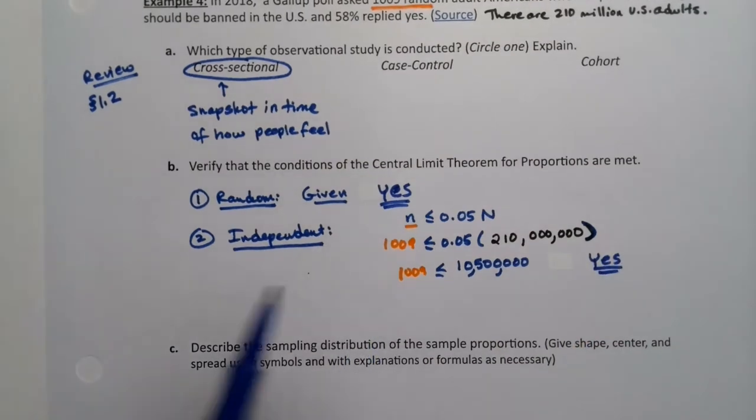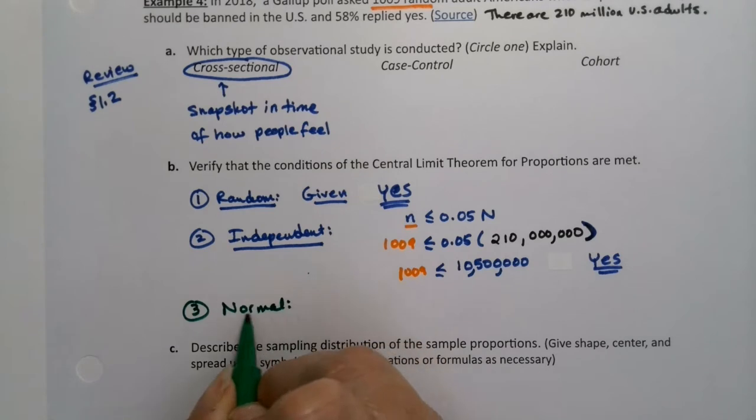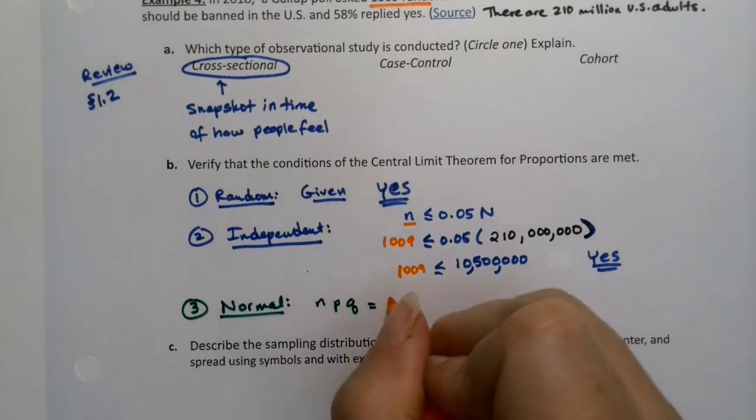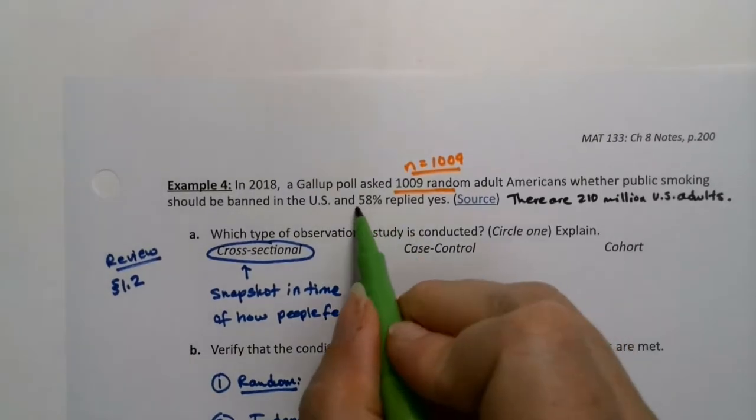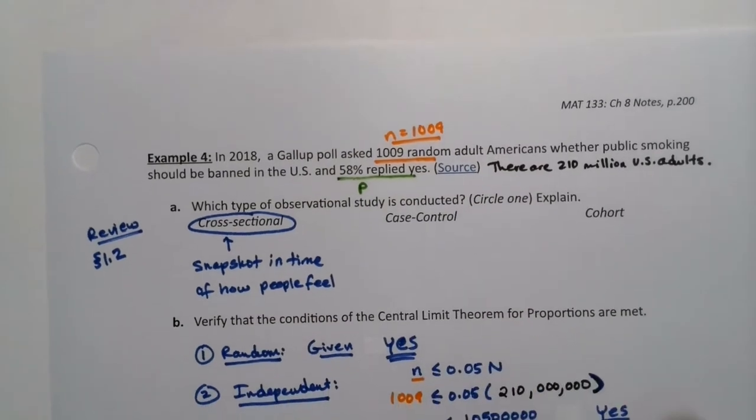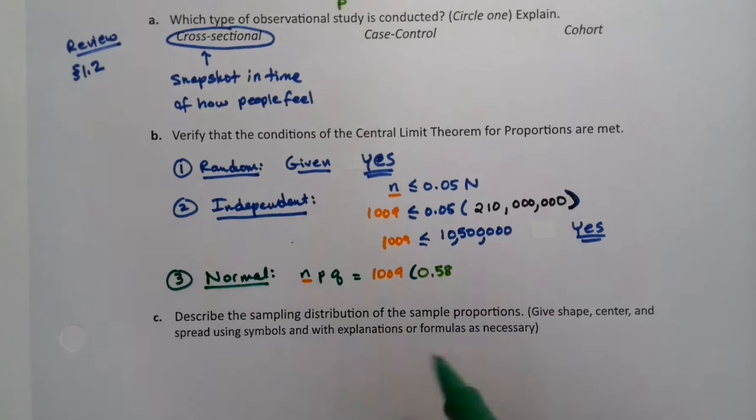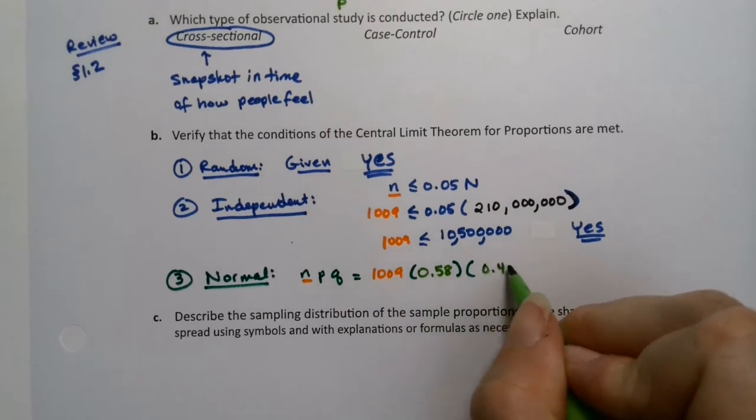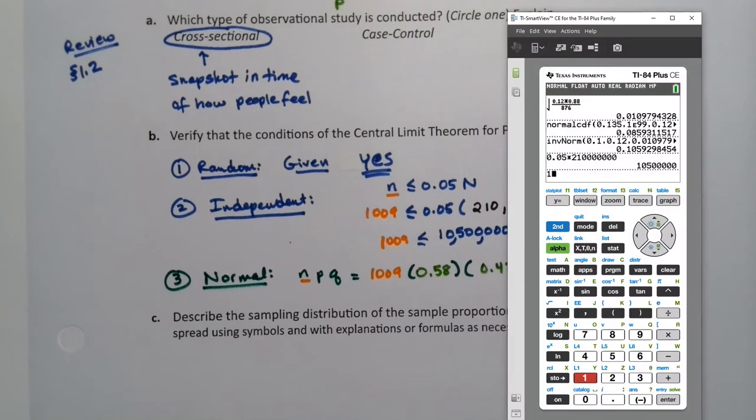So we have the first two conditions are met. Now it's time for the third condition. I'm actually going to do it in a different color just to make it easier, which is normal. To make normal, you need NPQ to be bigger than 10. N is 1,009. P, P was given to us. I just have to find it. It's right up here. That's P. It'll be some given proportion in the problem. So P is 0.58. And Q is the complement of P. It's 1 minus P, which is 0.42.